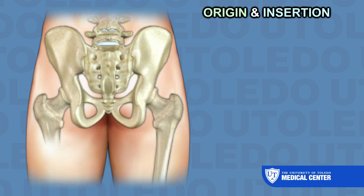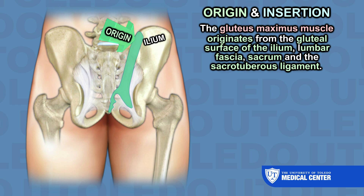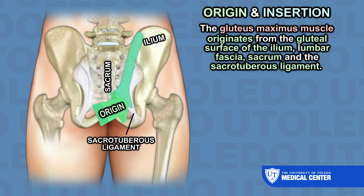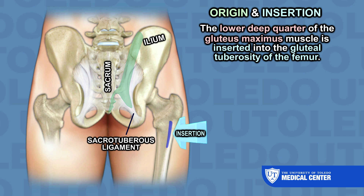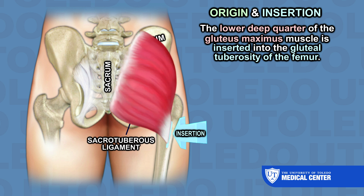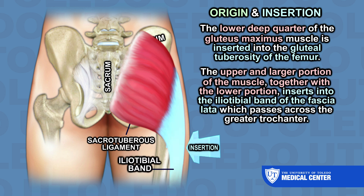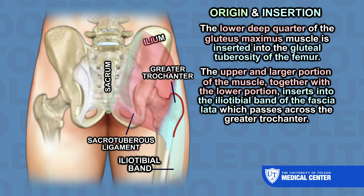Origin and insertion. The gluteus maximus muscle originates from the gluteal surface of the ilium, lumbar fascia, sacrum, and the sacrotuberous ligament. The lower deep quarter of the gluteus maximus muscle is inserted into the gluteal tuberosity of the femur. The upper and larger portion of the muscle, together with the lower portion, inserts into the iliotibial band of the fascia latae, which passes across the greater trochanter.